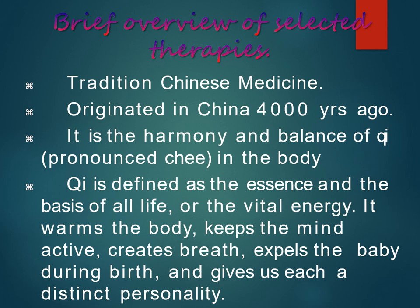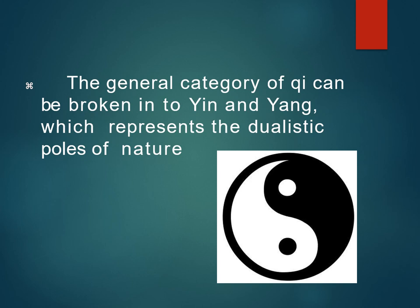The first one is Chinese medicine. It originated in China around 4,000 years ago and it is a balance between qi — pronounced as 'chi' — in the body. Chi is defined as the essence and basis of all life, or the vital energy. They believe it warms the body, keeps the mind active, creates breath, expels the baby during birth, and gives each person a distinct personality. Chi is also the basis for our energy, and it can be broken into yin and yang, which represents the dualistic poles of nature.